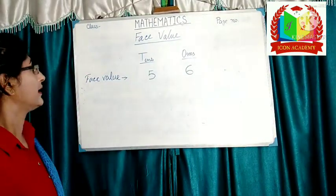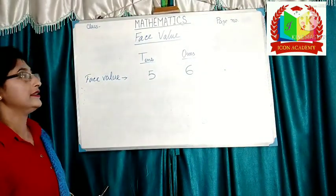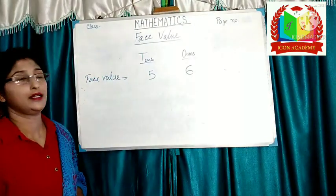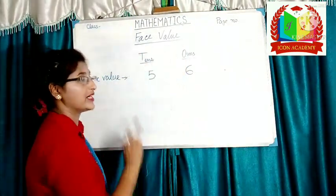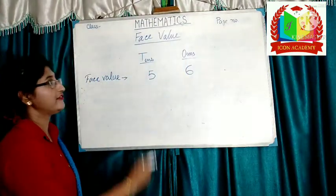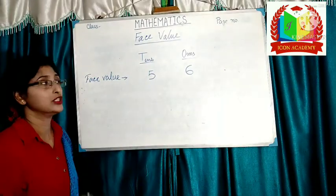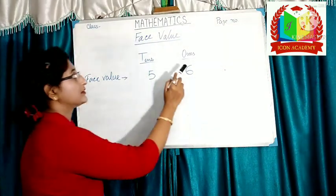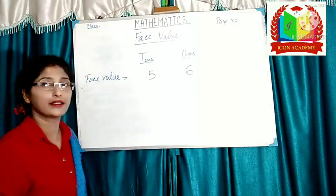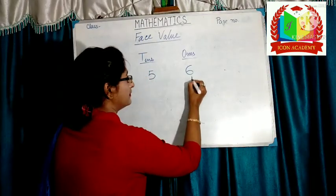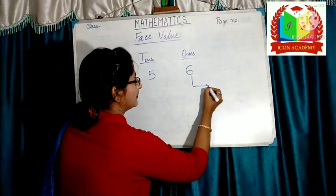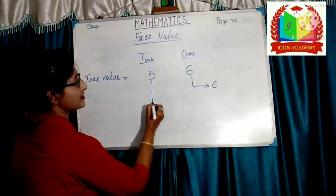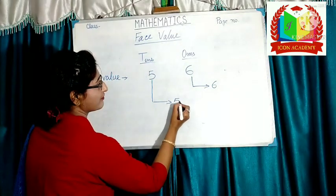Another example: here the number is 56. 6 is in 1's place and 5 is in 10's place. So, phase value of 6 is 6 and phase value of 5 is 5.